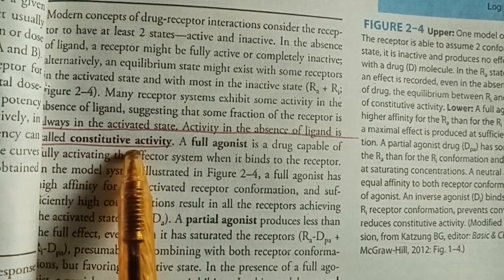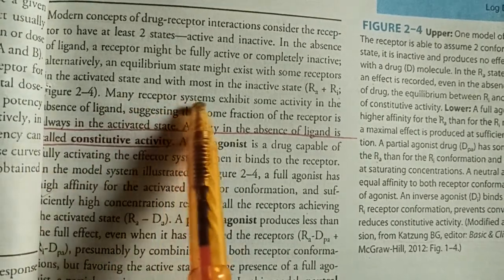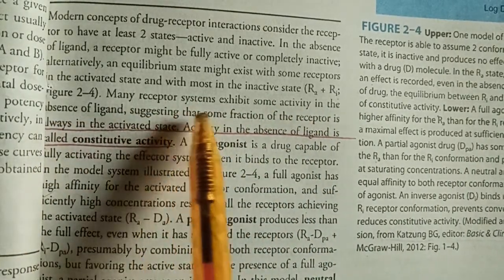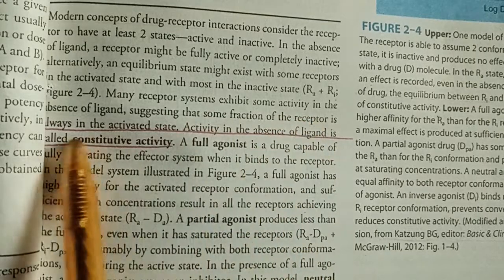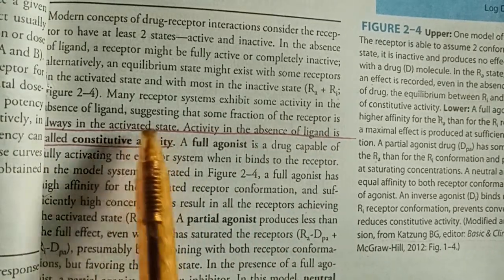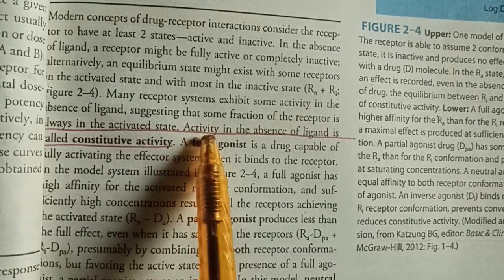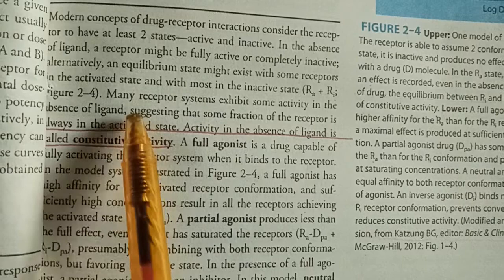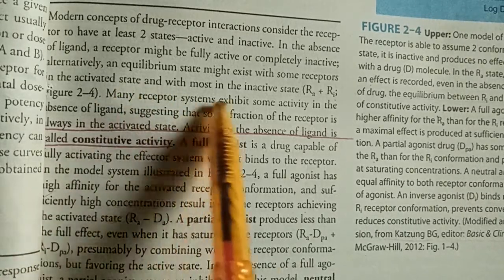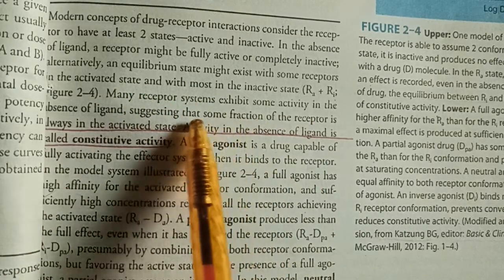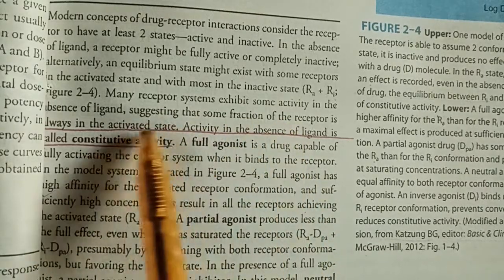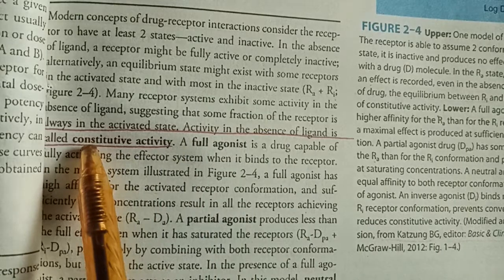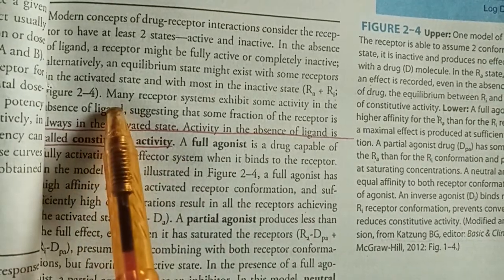Many receptor systems exhibit some activity in the absence of a ligand, suggesting that some fraction of the receptor is always in an activated state. This activity in the absence of ligand is called constitutive activity. Many receptors are actually in the active state — some portions of the receptors are always in an active state.